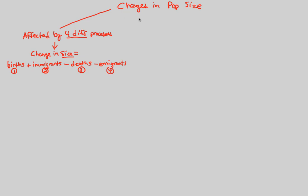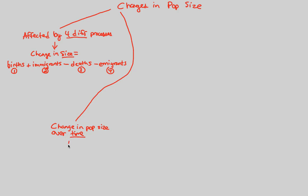We can get more powerful by looking at equations that help us focus on changes in population size over time. A population lives in the same place at the same time, so we need to factor in time. The change in population size over time, in mathematical terms, looks like this: delta N over delta t. This is change in population size — N stands for population size — over time t. This is going to be equal to B minus D.